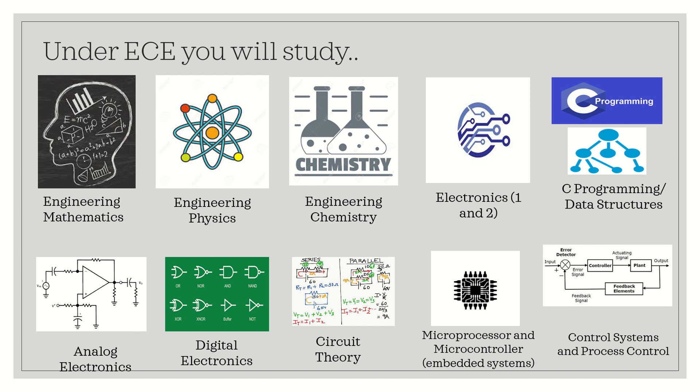Control systems and process control are also covered — some universities have both, some only control systems. This subject talks about how an engineering or manufacturing plant can work fine: managing multiple components, tracking errors, implementing feedback, and correcting them in real time. Controllers like P, PI, and PID are very in-depth concepts taught mostly in the sixth or seventh semester. It is connected to instrumentation, and in instrumentation programs they study it in even greater depth.